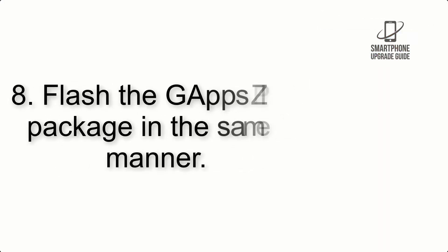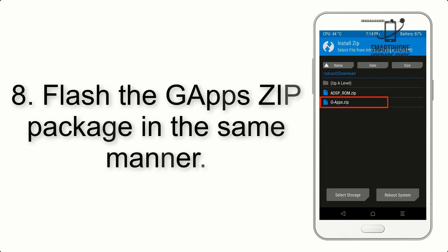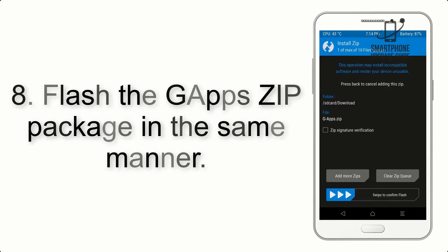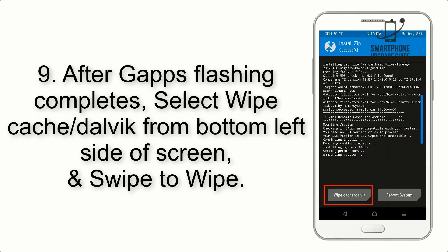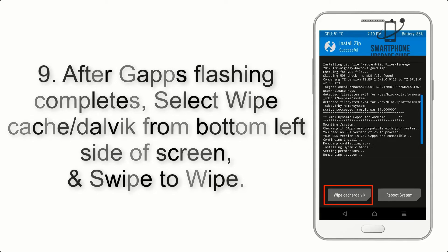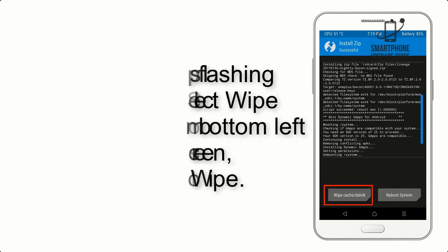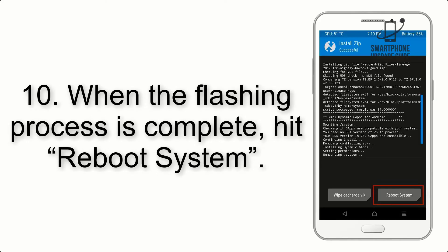Step 7: Swipe the button on the screen to install the ROM file. Step 8: Flash the GApps zip package in the same manner. Step 9: After GApps flashing completes, select Wipe Cache and Dalvik from the bottom left side of the screen and swipe to wipe.